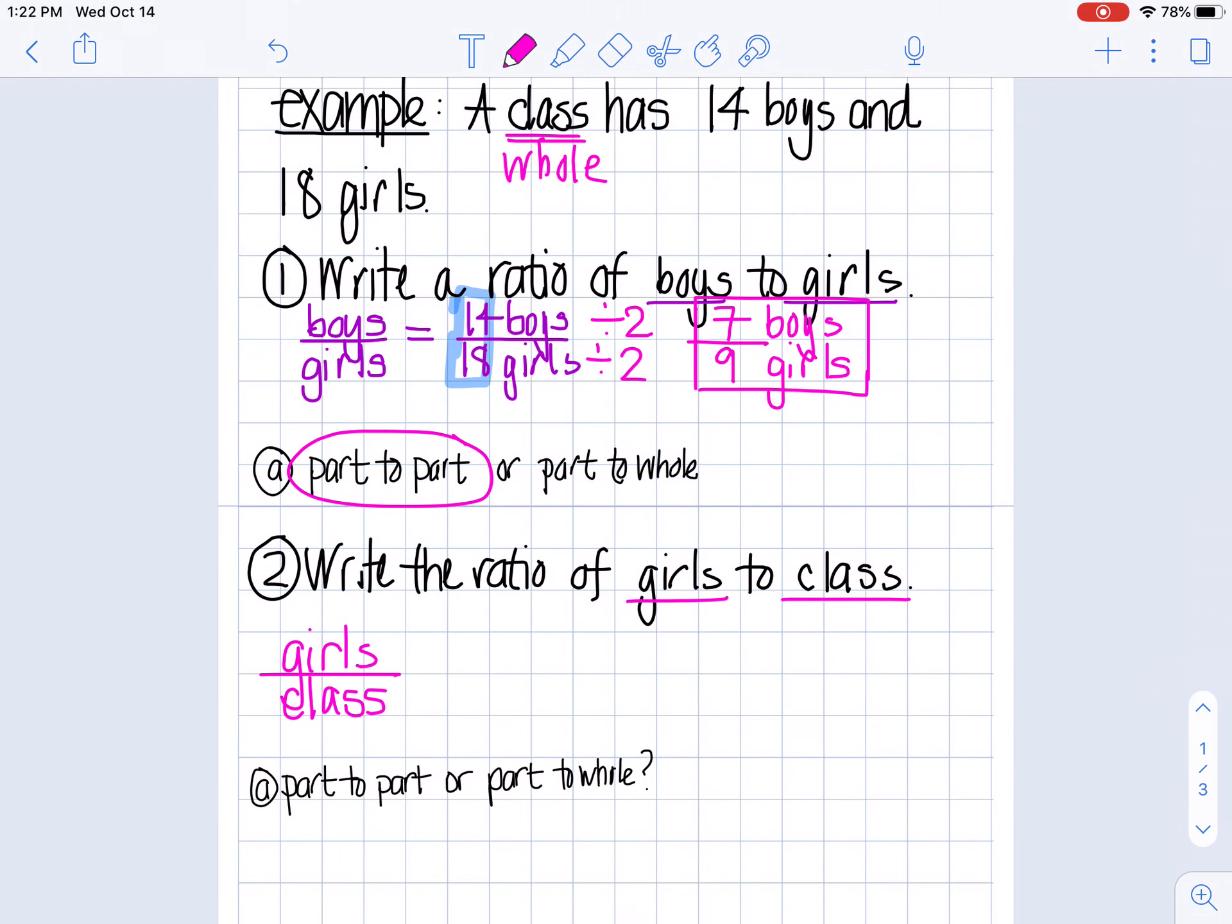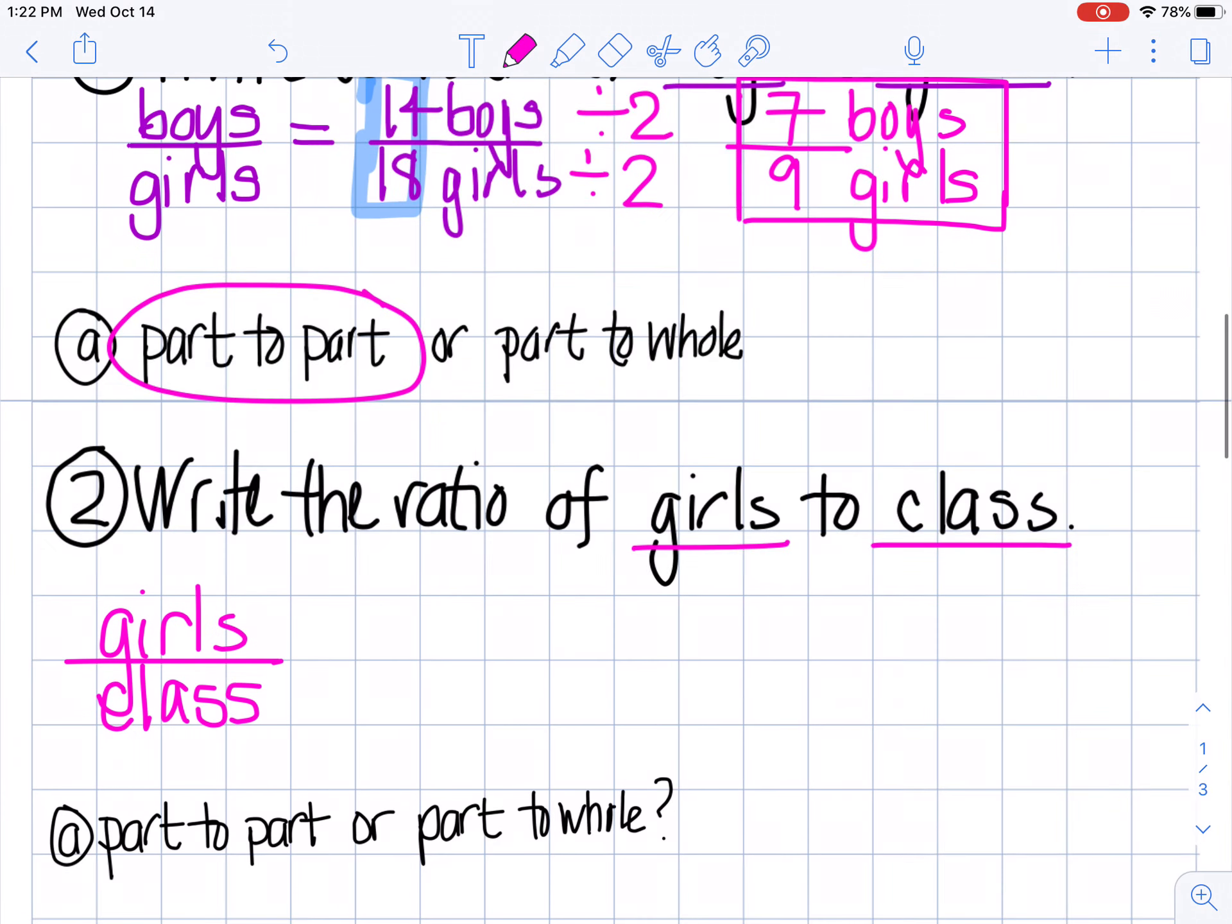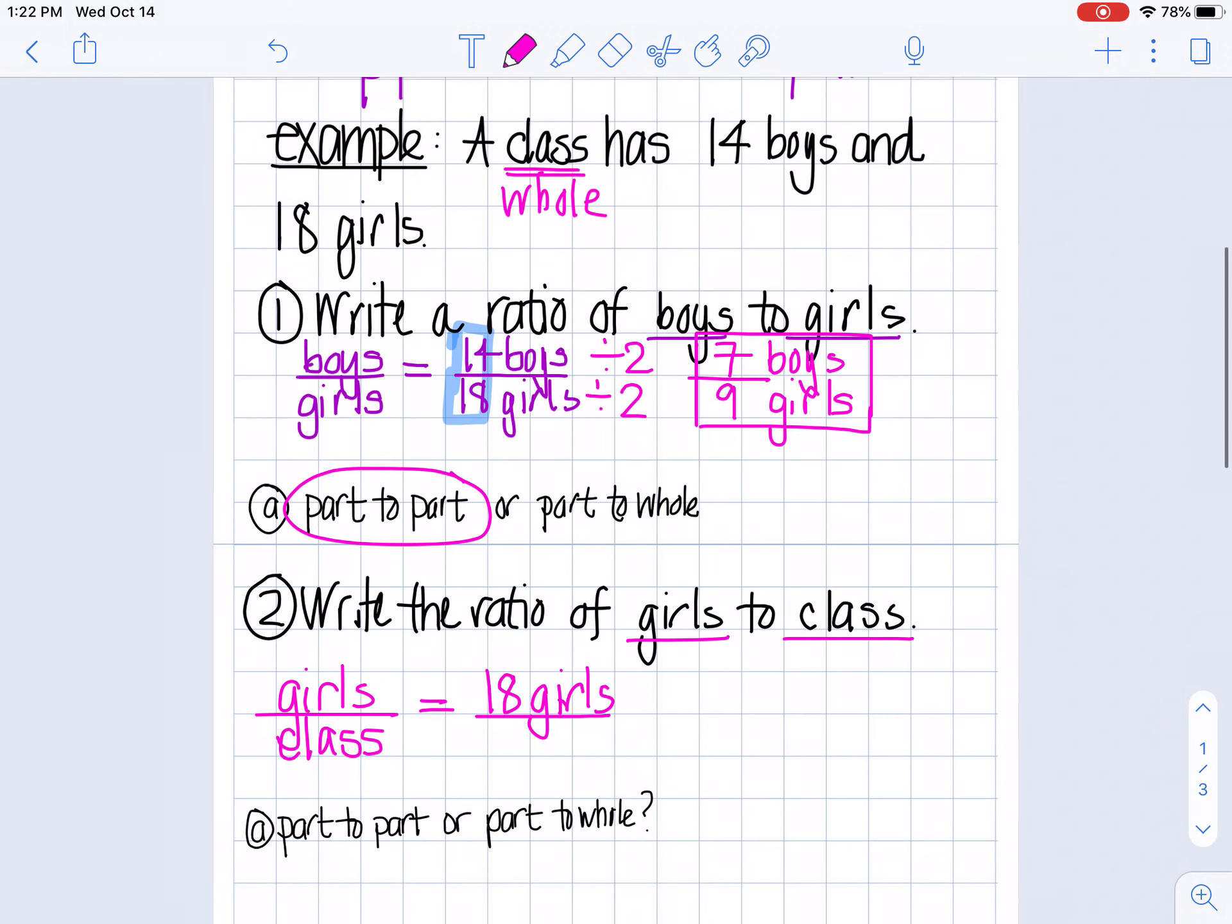So if I look back at my numbers, what number represents girls? A class has 14 boys and 18 girls. If you said 18, you are right. So I'm going to write 18 girls. How do I figure out how many people are in my class? The class is my whole group. And my class is made up of boys and girls. So how am I going to figure out how many total students are in my class?